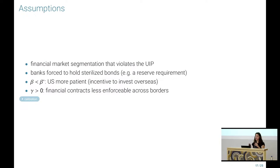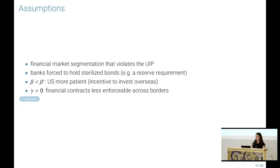Some key assumptions: there's a segmented financial market that leads to deviations from UIP. More related to sterilization, I assume banks are to some extent forced to hold these sterilized bonds — you can think of this as a reserve requirement, or as demand for domestic debt fully satisfied by any changes in the government's sterilized bond choice. I also assume U.S. households are more patient, so they have an incentive to invest in the emerging market.